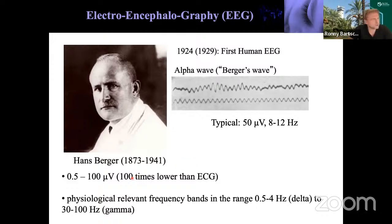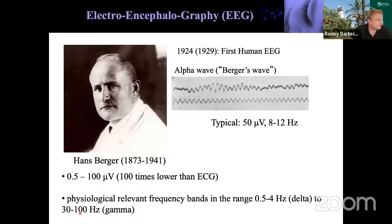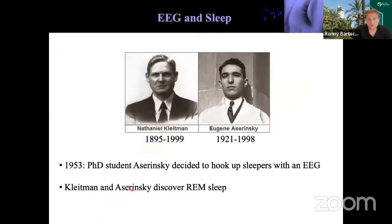The EEG is a mixed signal of many frequencies, on the order of 0.5 to 100 microvolts — about 100 times smaller than an ECG. Physiologically relevant frequencies range from 0.5 to 4 Hz, which are delta waves, up to high-frequency gamma waves in the order of 30 to 100 Hz. The EEG was invented but it took almost 30 years until it was used in sleep medicine.